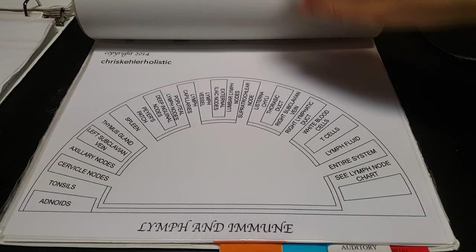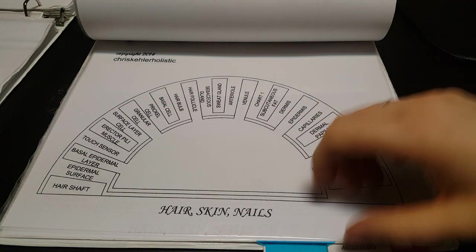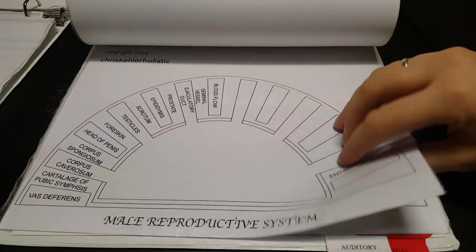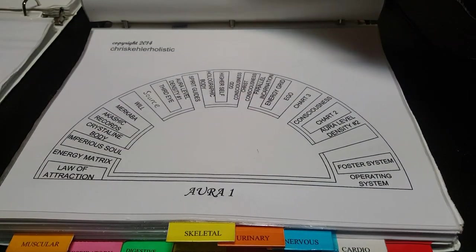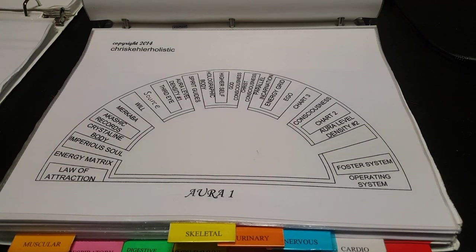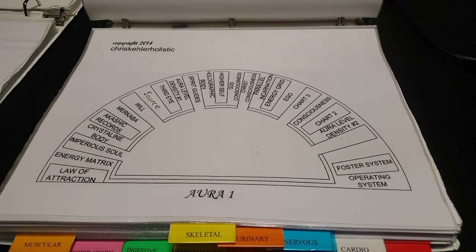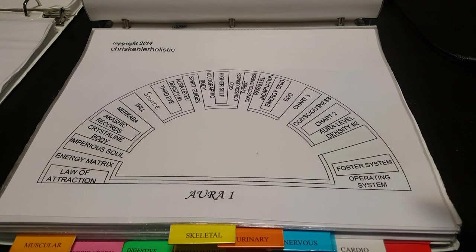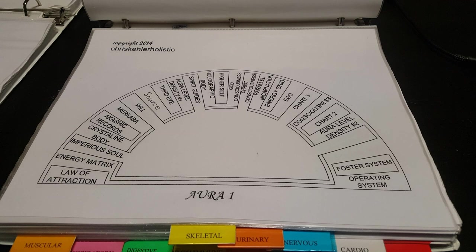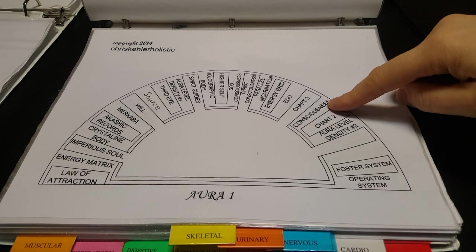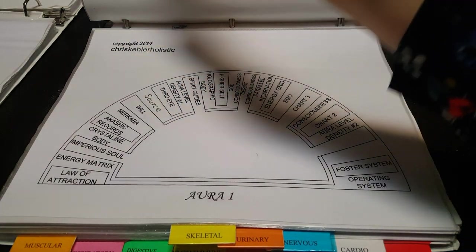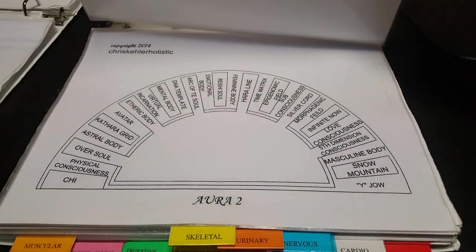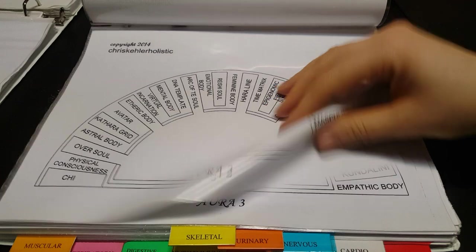This includes the respiratory system, digestive system, lymph and immune system, any problems within hair, skin and nails, and the reproductive system — both male and female. Within the energy area of your body, we have the aura and chakra charts. In True Quantum Healing, we work within about 70 different possible areas within your aura. My pendulum will pinpoint the area to be worked on — it could be within your consciousness, your higher self, your source, your astral body, or your dharma, which is your soul purpose.